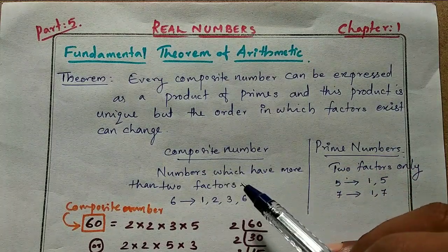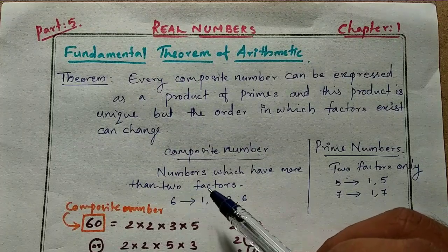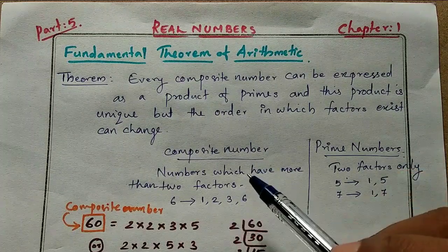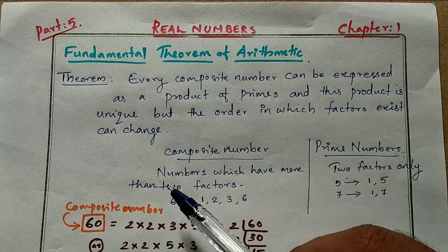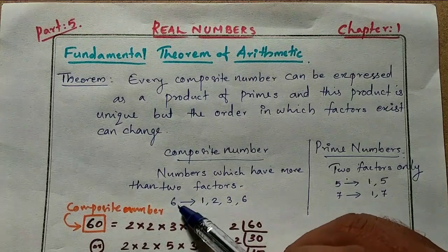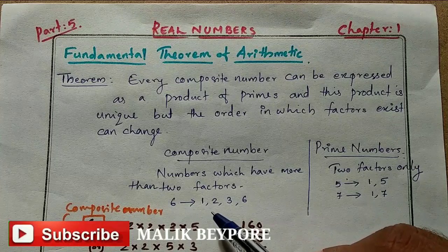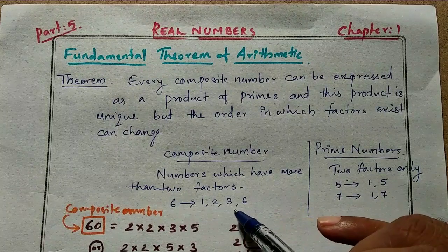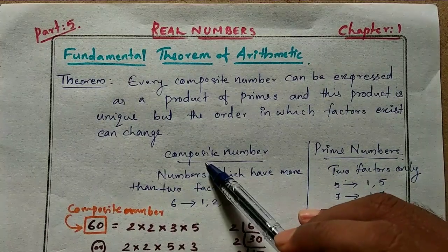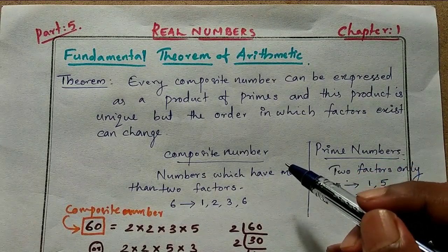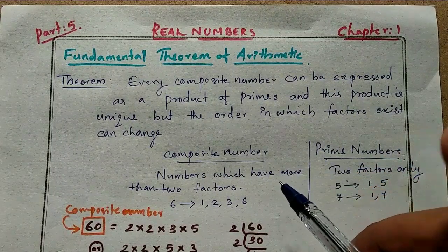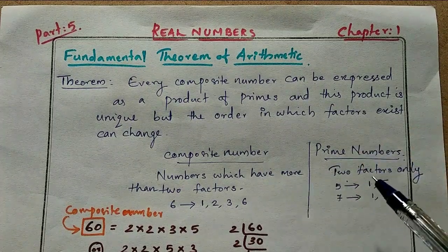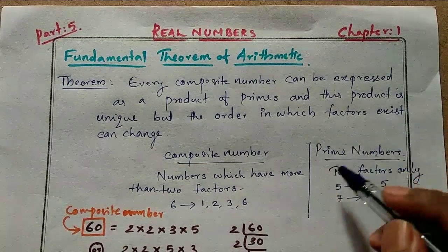First of all, what is a composite number? A composite number is a number which has more than two factors. For example, six is a composite number because one, two, three, and six are all factors of six — more than two factors. Another example: four has factors one, two, and four — again more than two factors, so four is also a composite number.